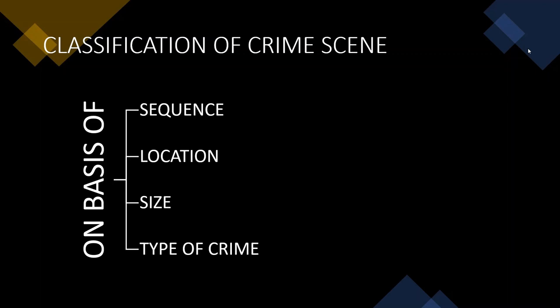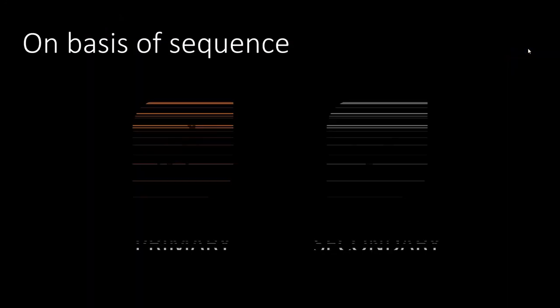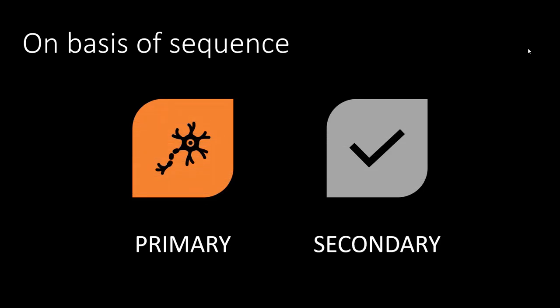Crime scenes can be classified on various bases: the sequence of the incident, location, size of the evidence, and the type of crime that occurred. On the basis of sequence, there are primary and secondary crime scenes. For example, in a murder case where Man A was murdered in a flat by Man B — to cover his tracks, Man B takes the body to a nearby water body and dumps it. The water body discovered by police would be the secondary crime scene, while the flat where the murder actually took place is the primary crime scene.